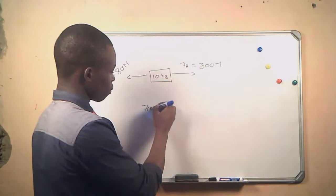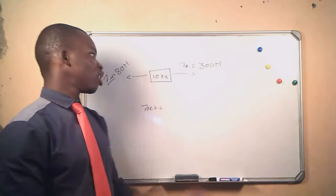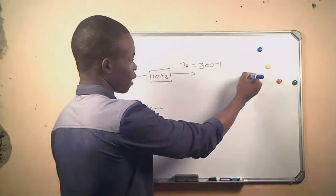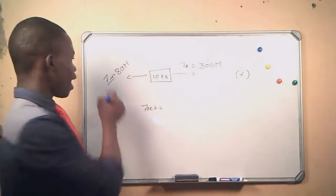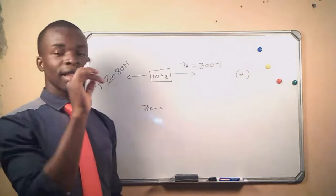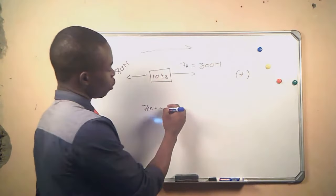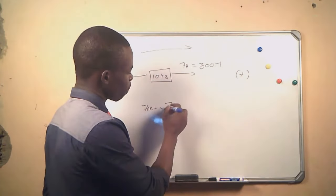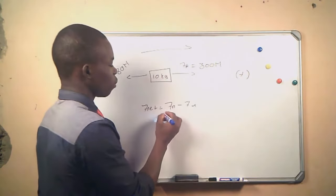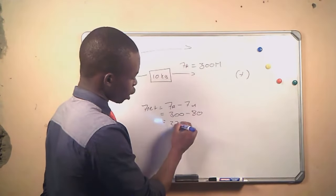Net force is the sum of all the forces acting on the object. Looking at this box, we have two forces. We will take the direction of the applied force as the positive direction, and the direction of the frictional force as the negative direction, since friction opposes the movement of the box. So net force equals the applied force minus the frictional force: 300 minus 80, which gives us 220 newtons.